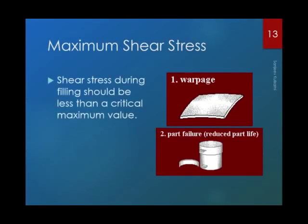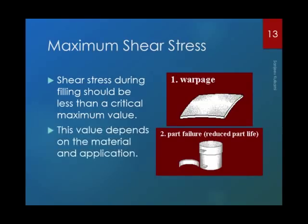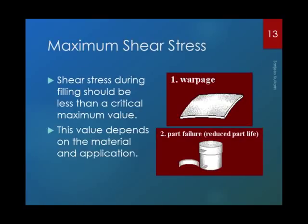Maximum shear stress: when polymer melts flow inside the mold, shear stresses are formed. Every material has a specific maximum allowable shear stress value. These shear stresses are frozen inside the component when the mold opens. If the shear stress value exceeds the critical maximum allowable value for that particular material, the part will warp or fail, reducing expected part life. You must ensure that maximum shear stress always remains below the allowable value for the material.